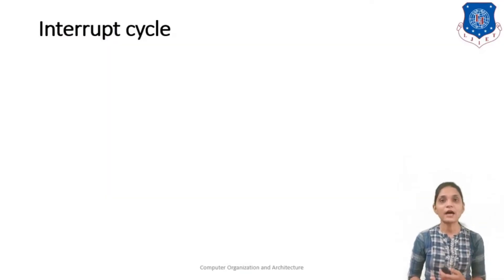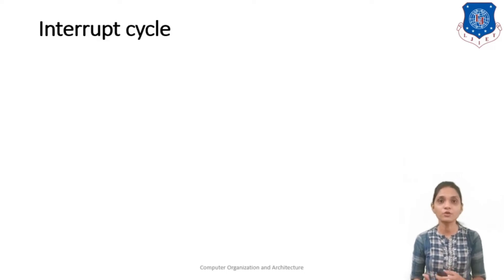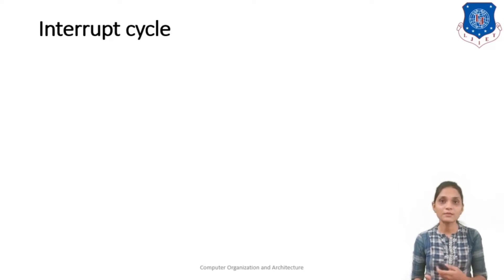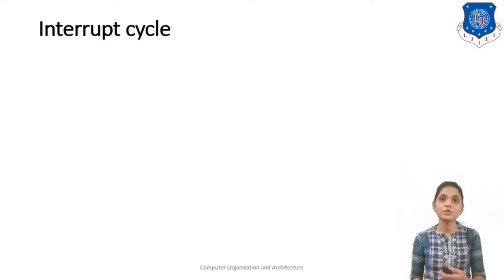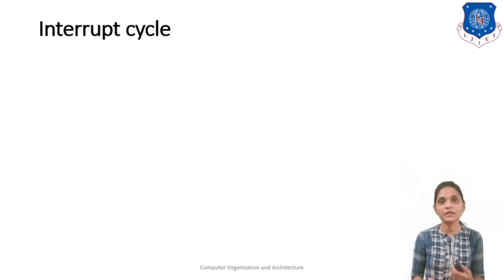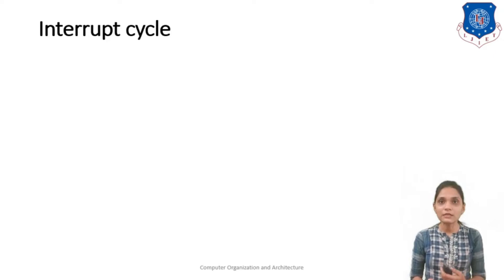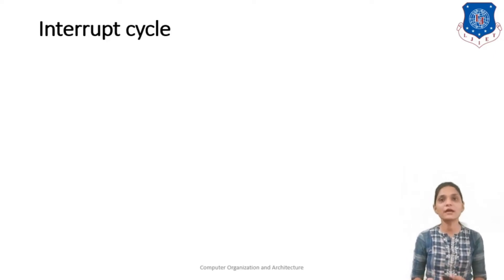We all are aware that interrupts are nothing but some high priority tasks that are required to be completed before normal execution. So while you are executing, the processor will be doing some of its own task. It has to stop its own task and execute this interrupt, and after executing the interrupt it has to return to its main program. So for that it has to store its return address. We can consider that the task of the interrupt is similar to some kind of subroutine.